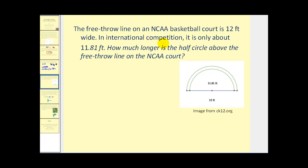The free throw line on an NCAA basketball court is 12 feet, as we see here in blue. In international competition it is only about 11.81 feet, as we see here inside. How much longer is the half circle above the free throw line in an NCAA court?